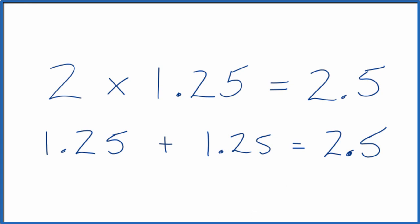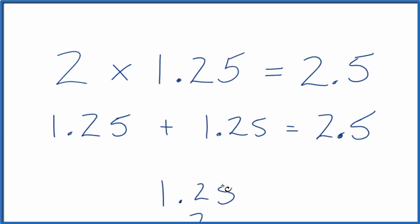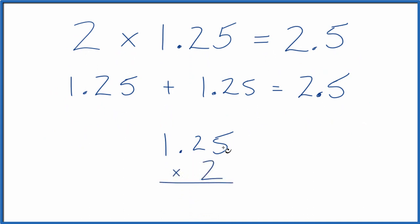Finally, we could just take 2 and multiply that times 1.25. 2 times 5, that's 10. Let's put the 1 up here. 2 times 2 is 4 plus 1, that's 5. And 2 times 1, that's 2.